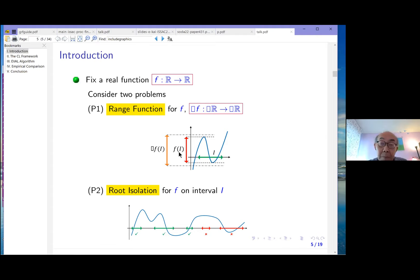The exact range is expensive to compute, probably not worth doing because it would involve root isolation or determining local maximas and minimas. So instead, we compute a box function, which is a superset of the exact function. That's what we mean by range function. The second problem, P2, is root isolation for F on an interval I. If I give you an interval I, I want to find all the roots of F on the interval.